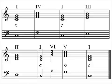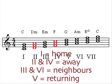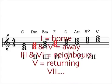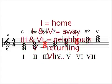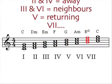So I've tried to show that chord one is home, chords two and four take us away, chords three and six are neighbors. Chord five is a returning chord and seven is, well, odd.